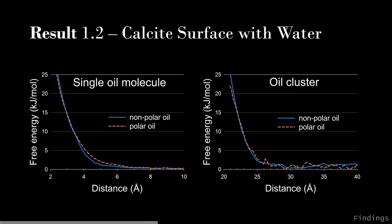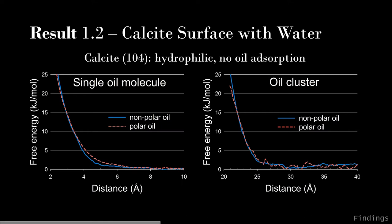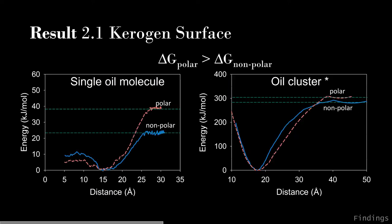When surface water was added, something different happened. There is no plateau after the minimum, just a flat line. This means in the presence of water, there is only repulsion and no attraction between oil and calcite. Because calcite is hydrophilic, the strong interaction between water and calcite prevents oil adsorption. For the kerogen surface, both single oil molecules and oil molecular clusters show that polar oil requires higher energy to be desorbed from kerogen, which is consistent with the calcite surface.